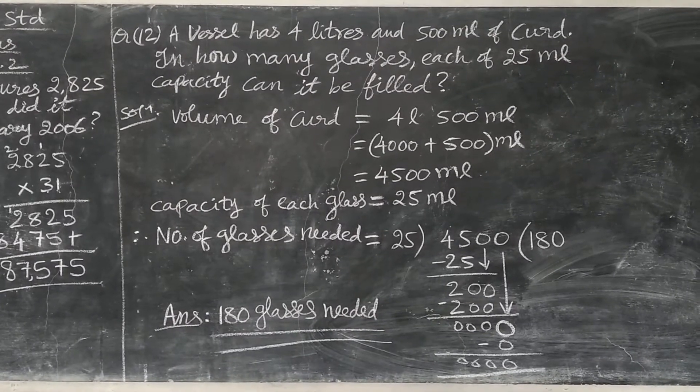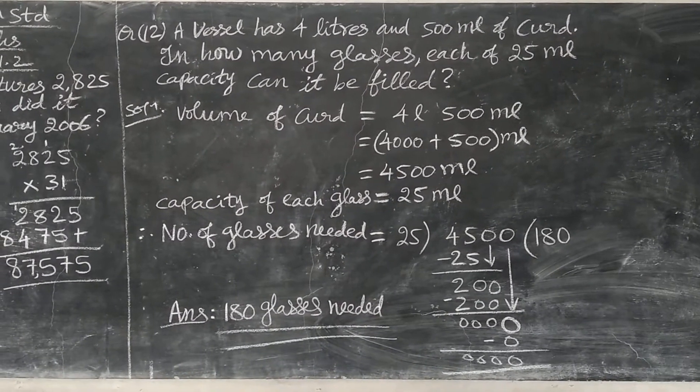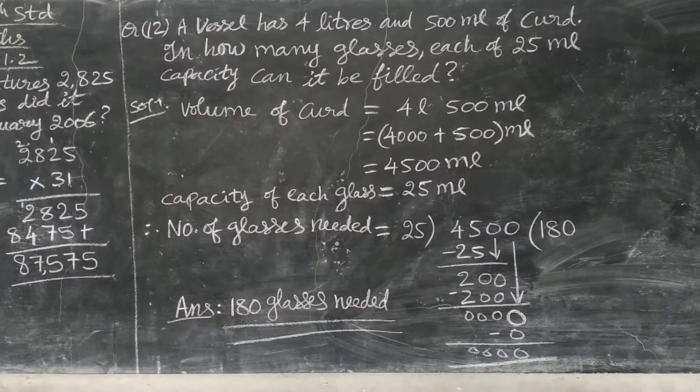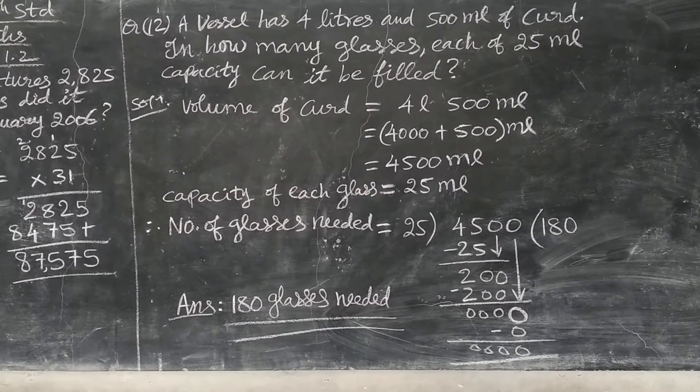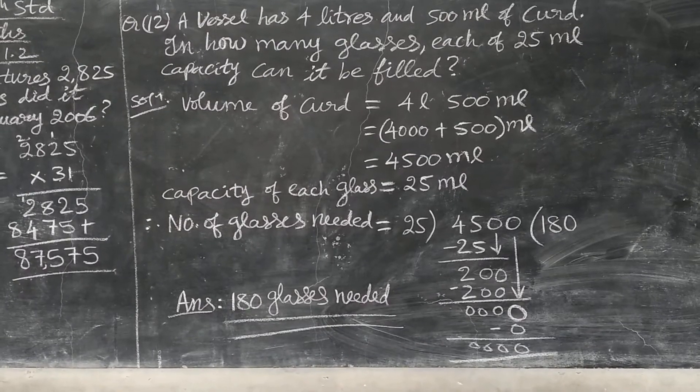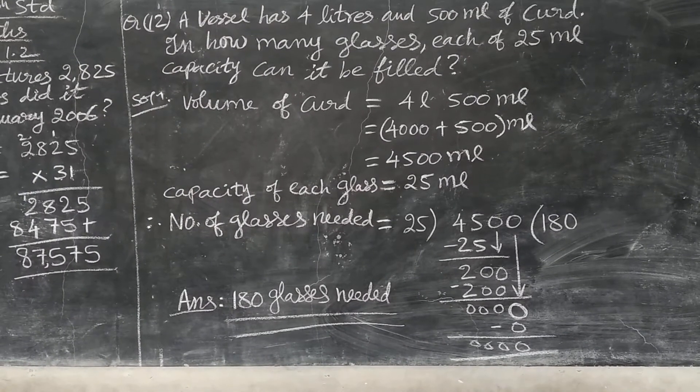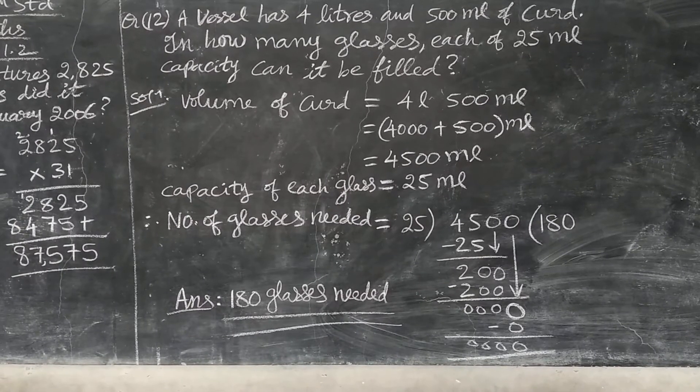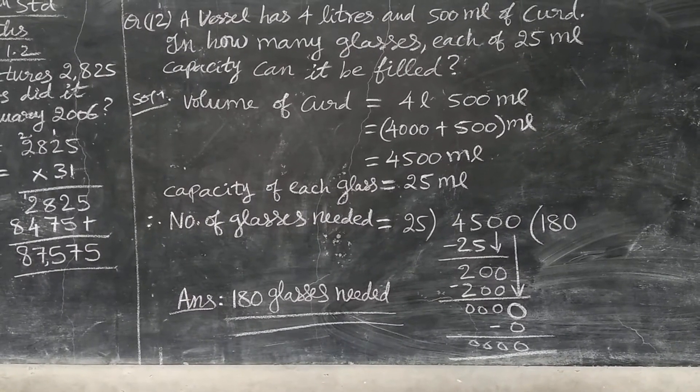You have to fill this curd in each glass. The glass capacity is 25 ml. So next sentence you see, capacity of each glass is equal to 25 ml. So in each glass you have to fill 25 ml curd. Totally 4500 ml curd is there.